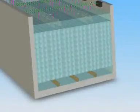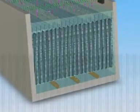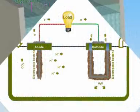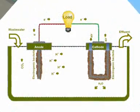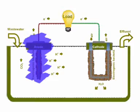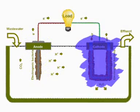The Electrode Modules consist of a multiplicity of high surface area anodes and cathodes installed in close proximity. A bioelectrochemical process occurs in two half-cell reactions: one on the brush anode and the other on the air cathode.